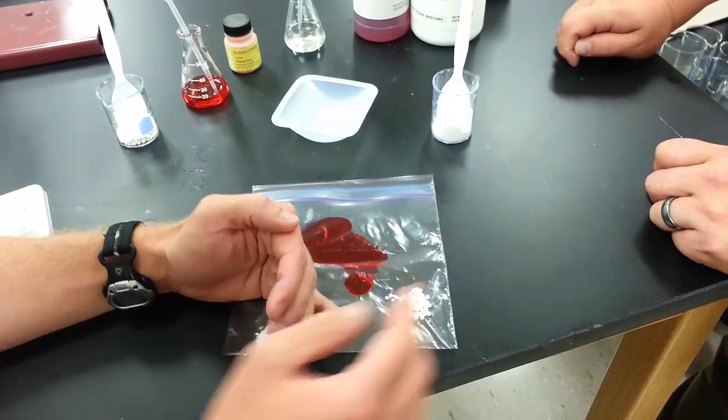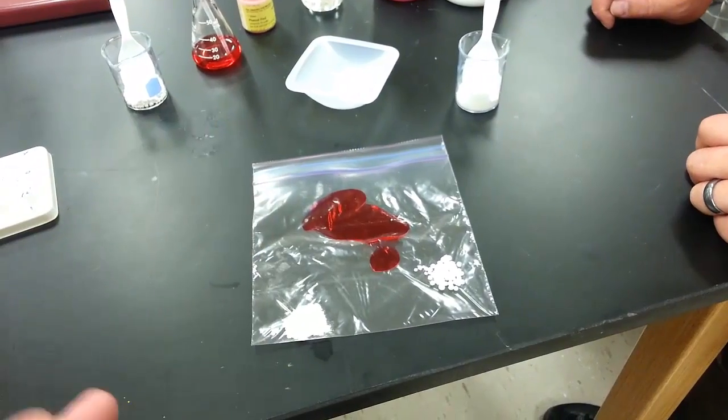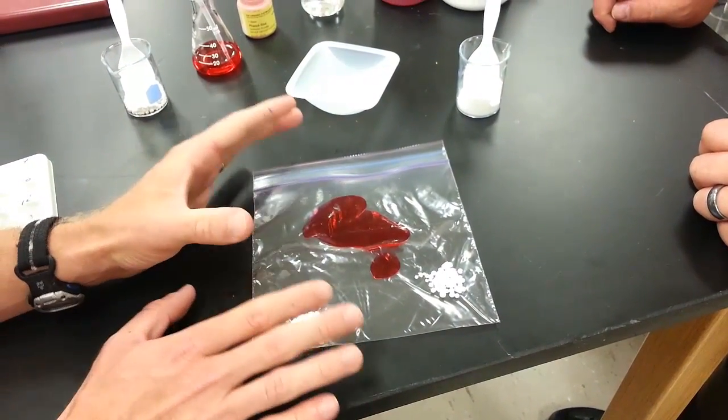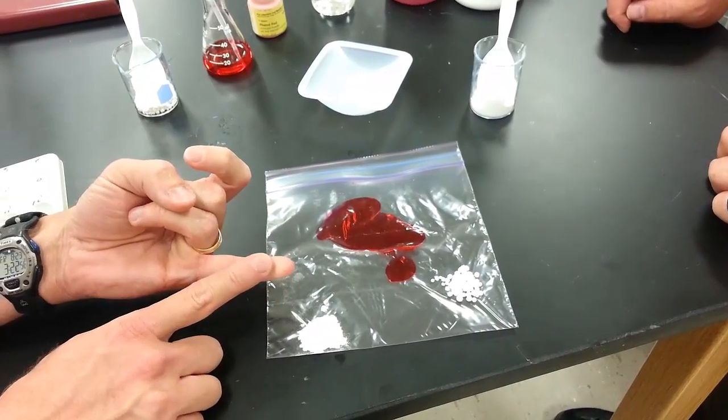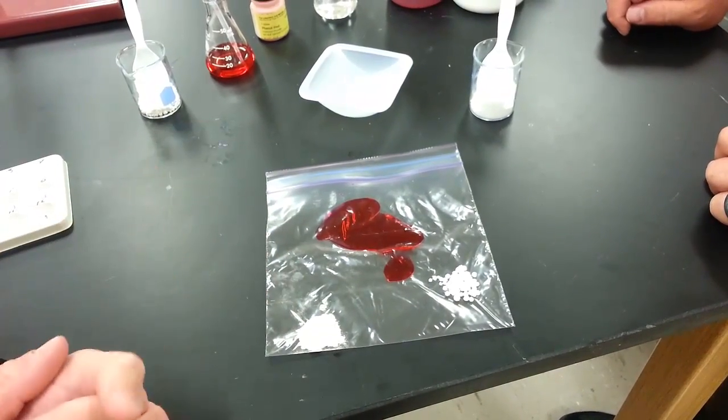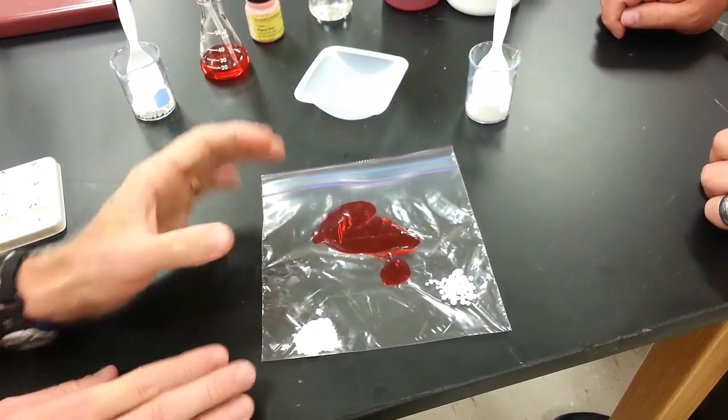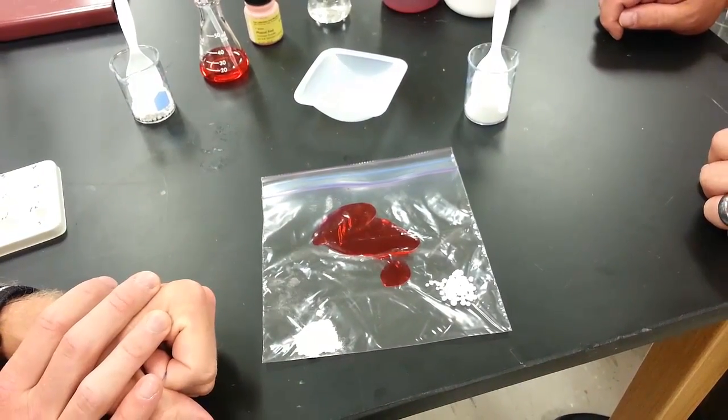Then your job is to take the baggie and mix it. We're not going to do that, but you're going to mix it up and make some careful observations. Try to touch it, see how it feels, visually see what's going on, maybe listen for some things. Your main goal here is observation. That's part A.